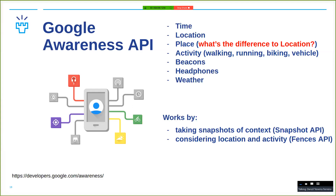It works by taking snapshots of context. To save power, it just records a little bit from sensors all at the same time, makes sense of that, and you get yes/no kinds of results — so you don't have to do that yourself. It also has a very nice API for creating geofences. You could use something like this for, say, the homework or even your project, where you can define geofences that trigger when the user comes in and goes out.